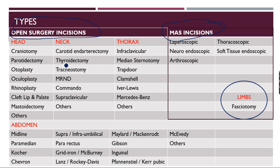In the head region, mastoidectomy and other incisions are also covered. In the neck region, commonly encountered incisions include the carotid incision for endarterectomy, thyroidectomy incision, tracheostomy, neck dissection incisions, modified radical neck dissection and its modifications, commando operation, and supraclavicular incisions. In the thoracic area: infraclavicular, median sternotomy, trapdoor, clamshell, Ivor Lewis, and Mercedes-Benz incisions.